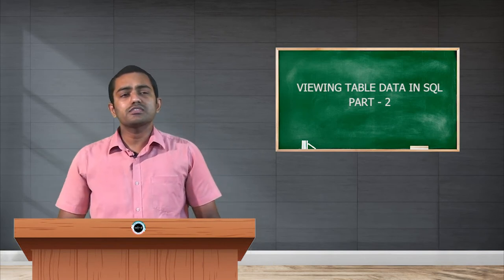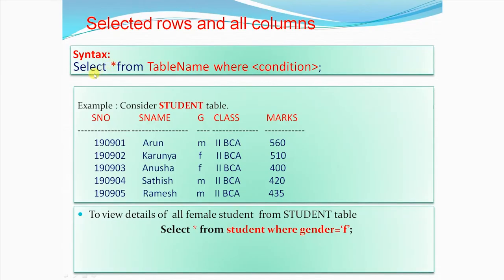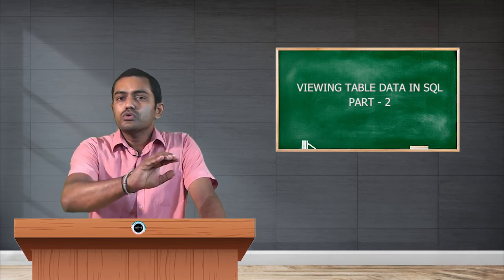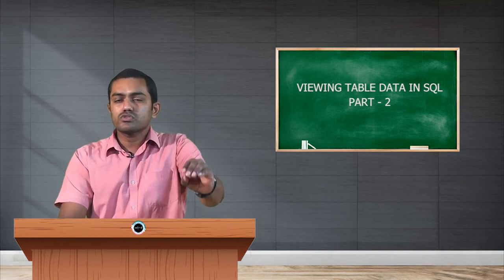The second category of filtering data is selected rows and all columns. Here we concentrate on selected rows but display all columns, so we use star after SELECT. The syntax is: SELECT star FROM table_name WHERE condition. We do not want all five records — only those satisfying a condition. We use the WHERE clause to specify the condition. On the left side of the operator is the column name, and on the right side is the value or expression to match.